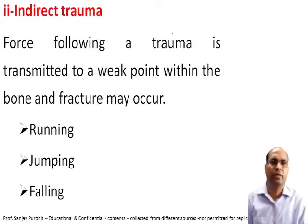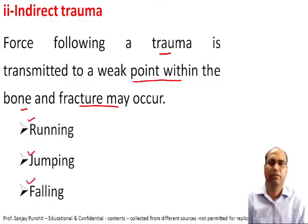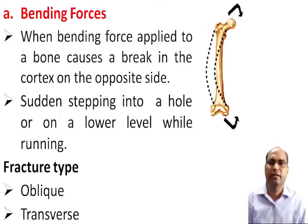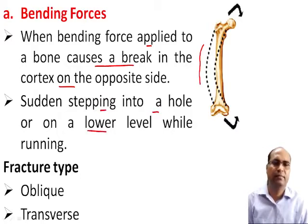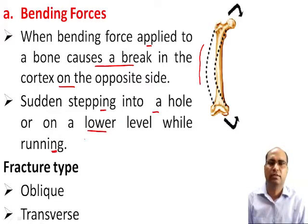In indirect trauma, forces following a trauma are transmitted to a weak point within the bone and fracture may occur. This type of indirect trauma occurs during running, jumping, or falling. Under indirect trauma, bending forces when applied to a bone cause a break in the cortex on the opposite side. Sudden stepping into a hole or onto a lower level while running causes these bending forces. Under the influence of bending forces there may be oblique or transverse fractures of the bone.